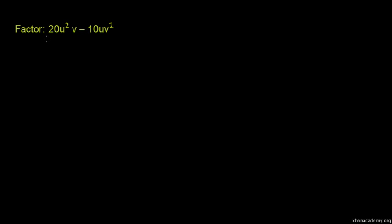Looking at the first term, 20u squared v, we need to find the prime factors. We can break down 20 into its prime factors: 2 times 2 times 5. Then u squared is u times u.